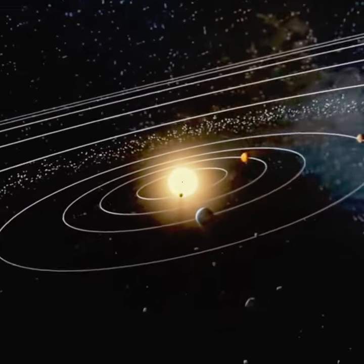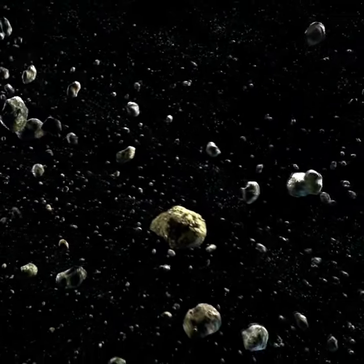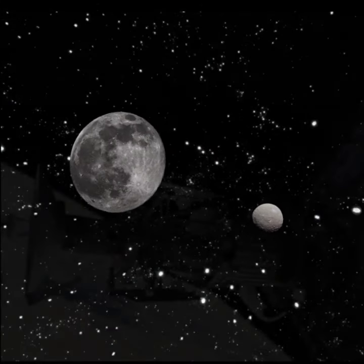Why didn't the asteroid belt form into a planet? The first reason is if we took all the pieces of the asteroid belt and put them together as a single object, that object would only have about 4% of the mass of the moon.